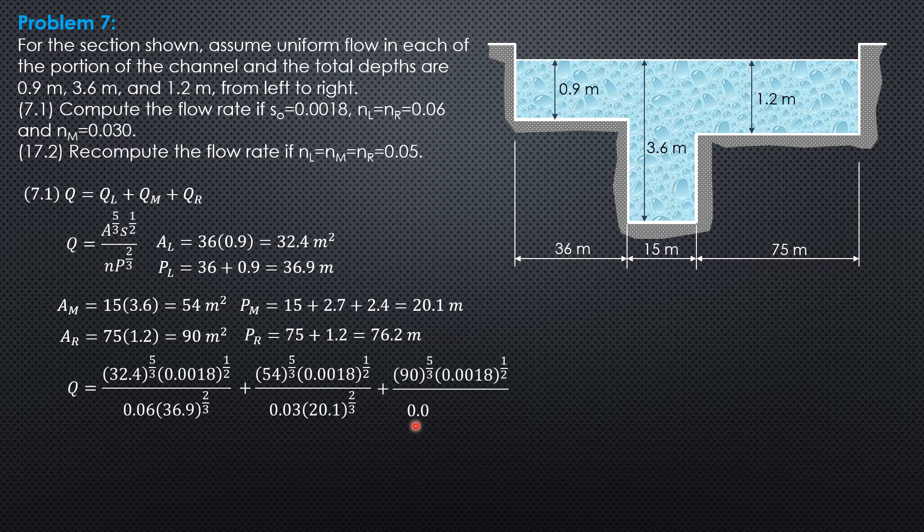Then wetted perimeter 20.1 to the 2/3 plus right channel 90 to the 5/3 times quantity 0.0018 to the 1/2 over 0.06 for the right channel, and then perimeter 76.2 to the 2/3. Computing for each channel: 21.01 plus 147.58 plus 71.11. So the discharge total is 293.7 cubic meters per second.